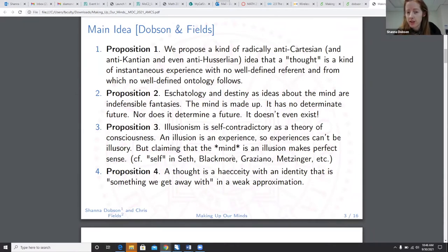Proposition two, eschatology and destiny as ideas about the mind are indefensible fantasies. The mind is made up. It has no determinant future, nor does it determine a future. It doesn't even exist. Illusionism is self-contradictory as a theory of consciousness, and illusion is an experience. So experiences can't be illusory. But claiming that the mind is an illusion makes perfect sense. Proposition four, a thought is a haecceity in the Deleuzian sense with an identity that is something we get away with in a weak approximation.